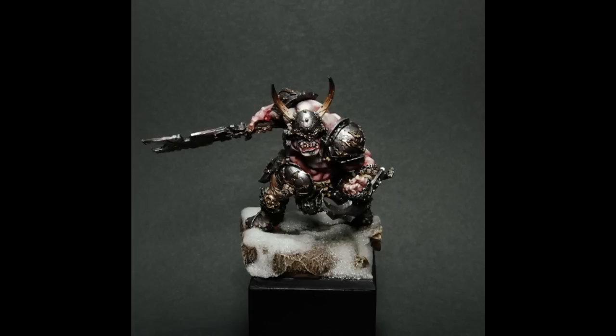This next piece, his Chaos Ogre, also uses the Secret Weapon Scenics Crushed Glass. Again, you can see how you get that nice, wet, slushy, flowing look from crushed glass that you're just not going to get with any other snow product out there.